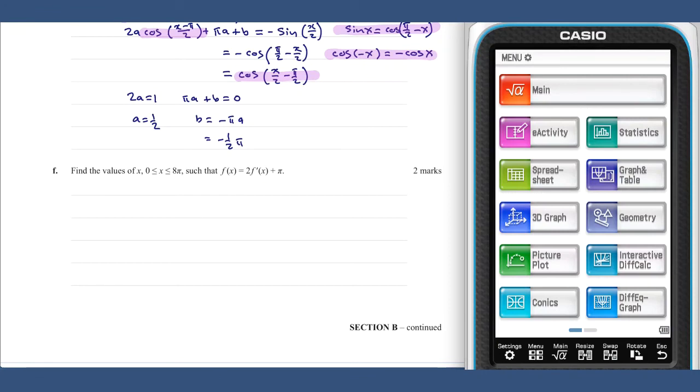Part f asks us to solve the equation 2 cosine x on 2 plus pi, in other words our function, equals minus 2 sine x on 2, 2 by our derivative, plus pi. And we'll solve this for x between 0 and 8 pi. Using our class pad.